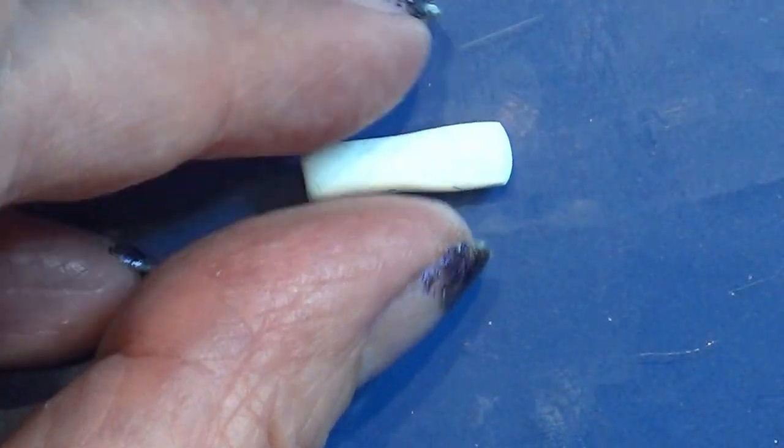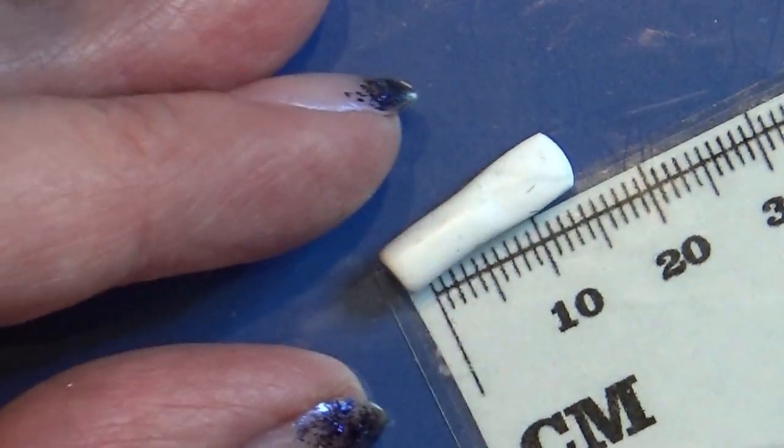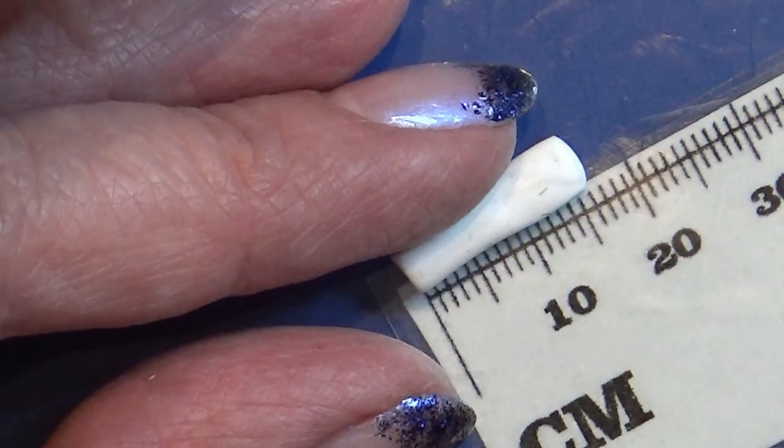Then I take my ruler again and make sure it still has the right length, and if not, then I just cut it to length in the flat end.